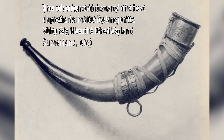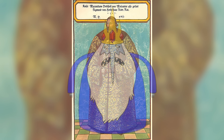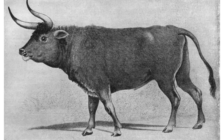Besides those of Lascaux, Chauvet, and others, we have an engraving by Sigmund von Herbenstein, historian and diplomat of the Holy Roman Empire, published in a book in 1556, which has an inscription that reads: 'I am Orochs, Tor in Polish, Orochs in German. The ignorant ones have given me the name of Bison.' And a copy of an older painting by Charles Hamilton Smith, which appears to depict a cattle-aurochs hybrid.